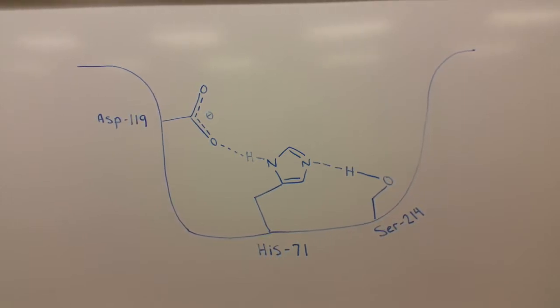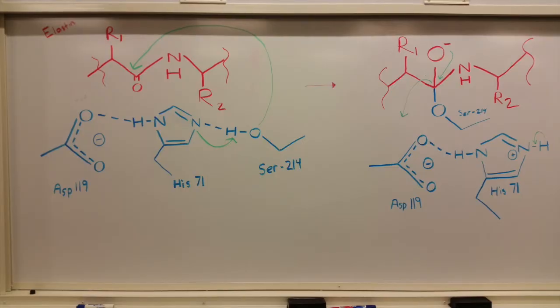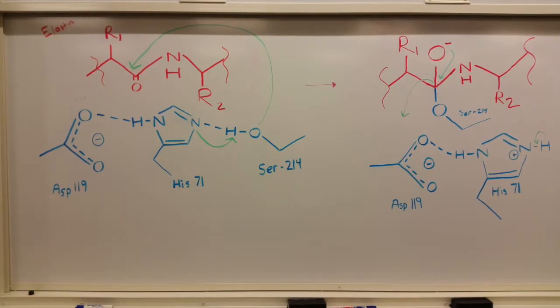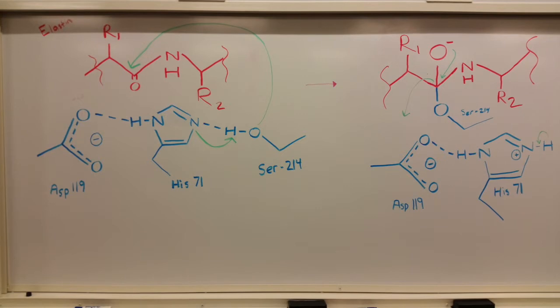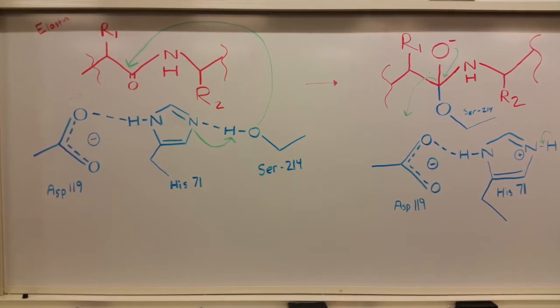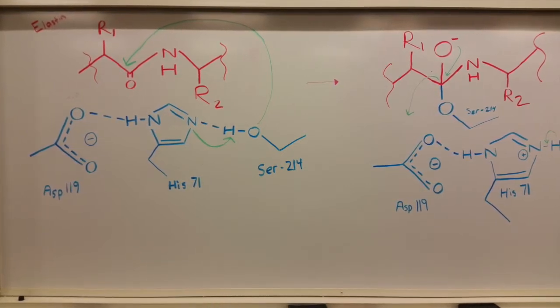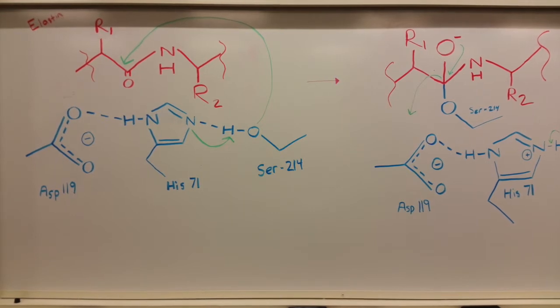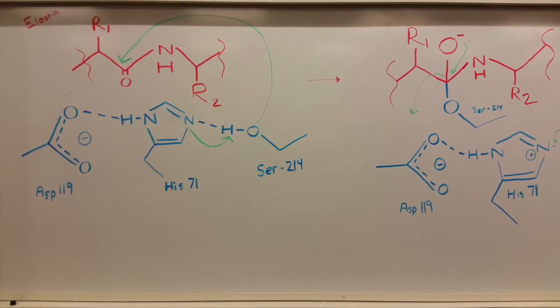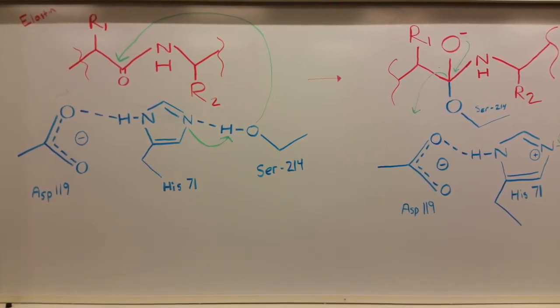The reaction starts with histidine-71 acting as a base and extracting a hydrogen from serine-214, creating an alkoxide. The alkoxide attacks the carbonyl of elastin, forming a tetrahedral intermediate.